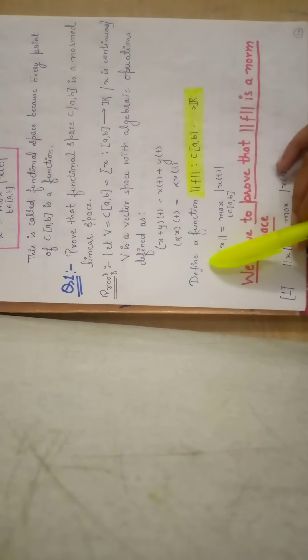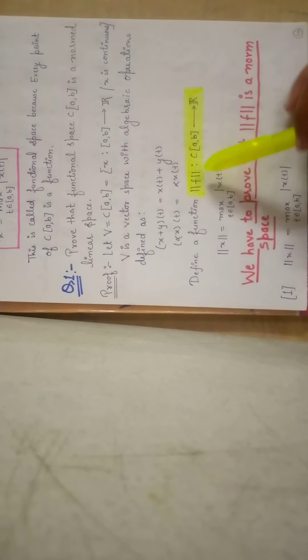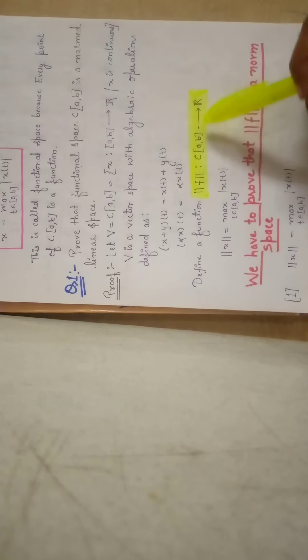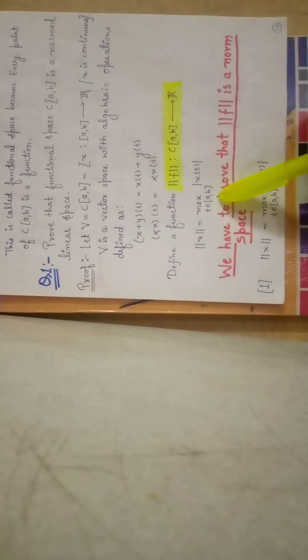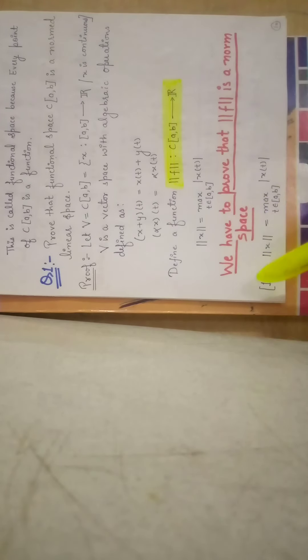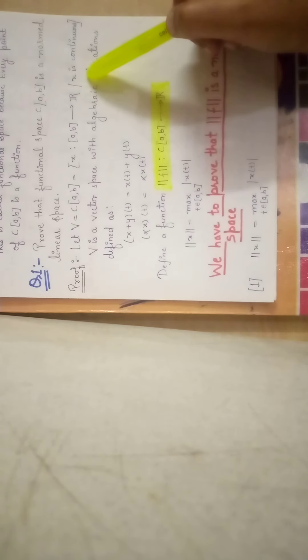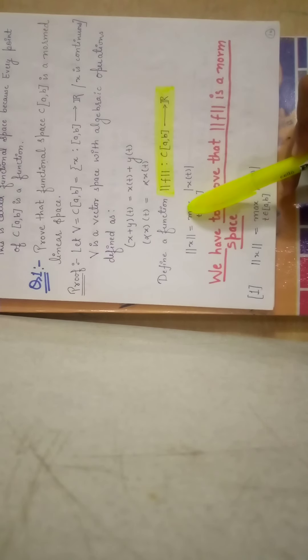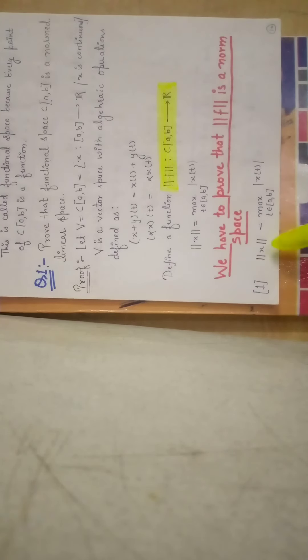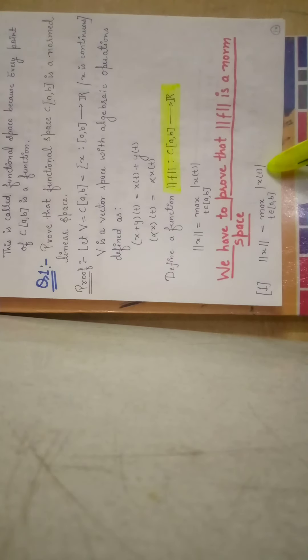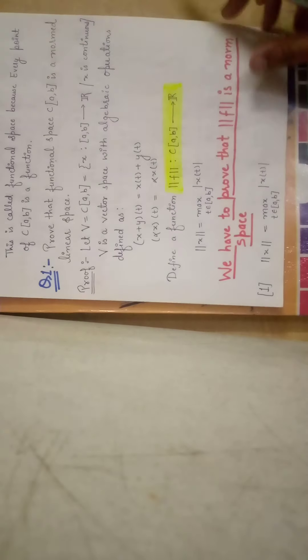We define a function norm: ||·|| from C[a,b] to ℝ. The norm of x is defined as ||x|| = max_{t ∈ [a,b]} |x(t)|. We have defined this norm function and now we will prove that it satisfies the four conditions of a norm space.